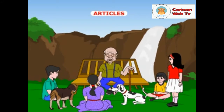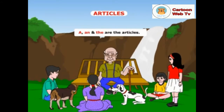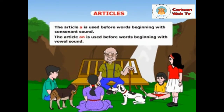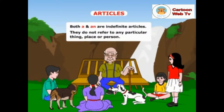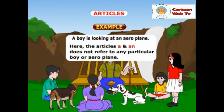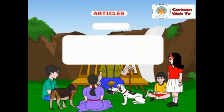Now, we will see articles in detail. As I have already said, a, an and the are the articles. Tell me, when should the articles be used? The article a is used before words beginning with consonant sound, and the article an is used before words beginning with vowel sound. Keep it in mind that both a and an are indefinite articles. They do not refer to any particular thing, place or person. Example: a boy is looking at an aeroplane. Here, the articles a and an do not refer to any particular boy or aeroplane.